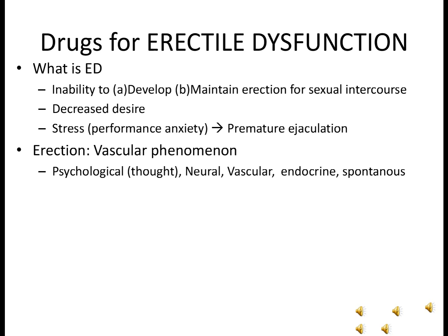Erection is a vascular phenomenon with multiple inputs and components. It can be psychological, as it can be provoked by thought. It has neural components in the form of intact parasympathetic nerve supply from the spinal cord S2, S3, S4 through nerve fibers to the pelvic plexus, from which second-order neurons through the cavernous nerve supply the penis. Vascular input is via the deep artery supplying the corpus cavernosum, and the inferior artery of the penis supplying the corpus spongiosum — both branches of the internal pudendal artery. The endocrine component is normal testosterone level, and sometimes erection is altogether spontaneous.